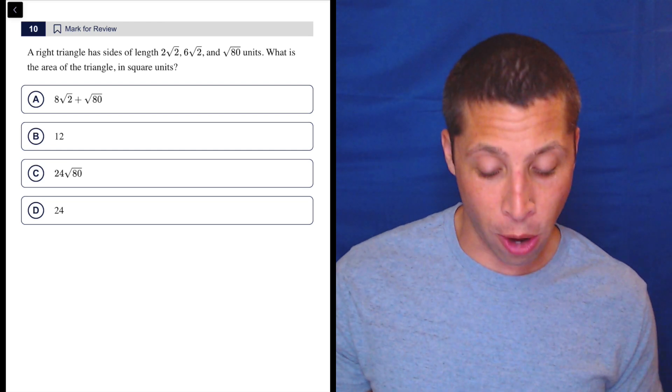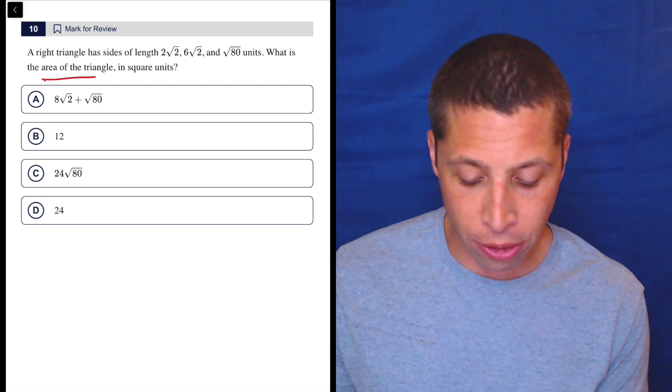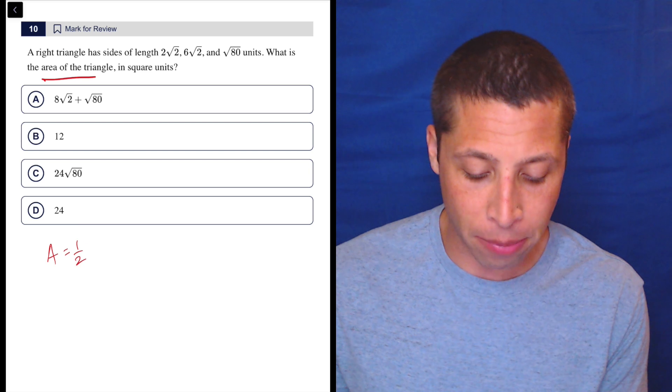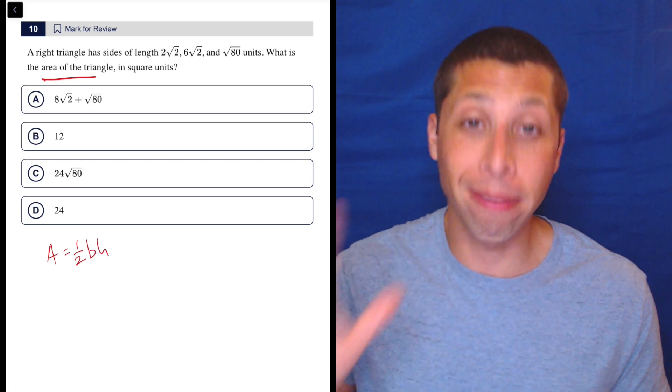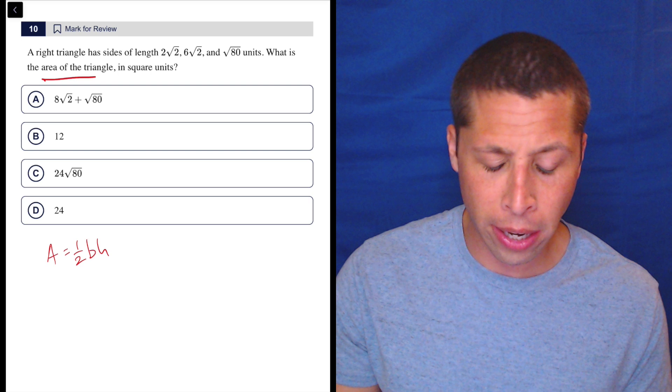Okay, so we hopefully know that the area of a triangle is going to be the base times the height times a half or divided by two. That's given in the reference chart. So if you don't know that, then you can pick it out of the reference chart.